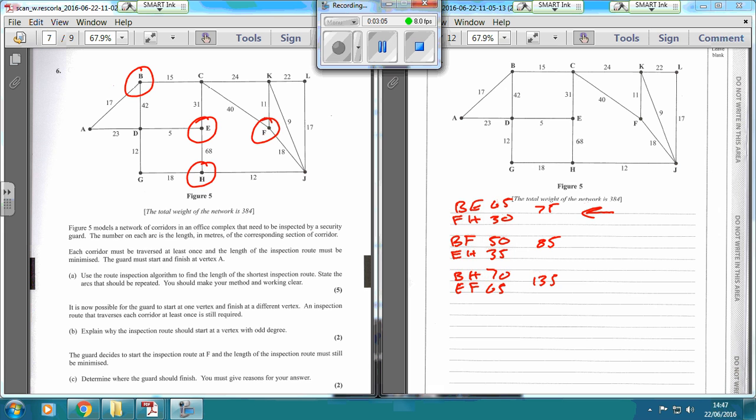And so, if we're going from B to E, we said the quickest way to get from B to E was 45, which was B to A, A to D, and then D to E. Therefore, B to A, A to D, and D to E have to be traversed twice.